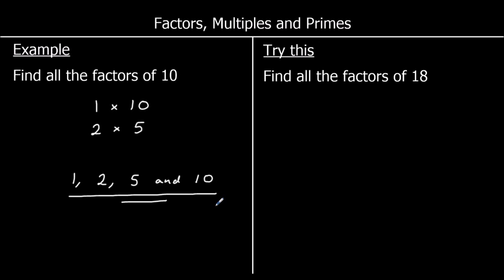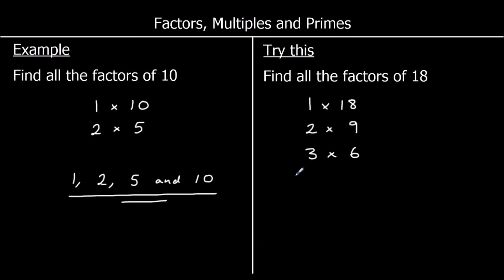So 18 is in the 1 times table: 1 times 18. The 2 times table: 2 times 9. And the 3 times table: 3 times 6. It's not in any other times tables. These are all the factors of 18.